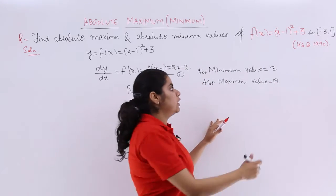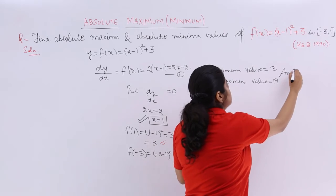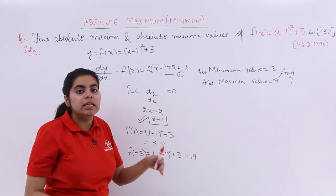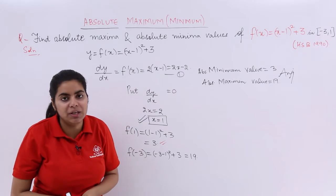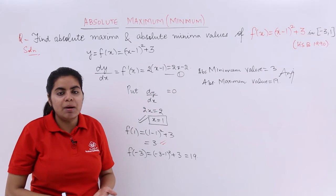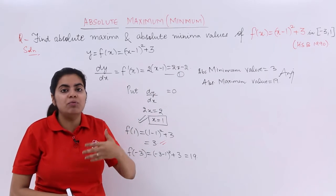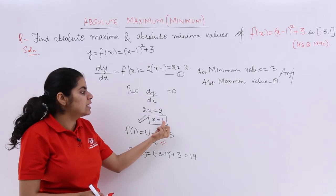Now, in this question you have directly got the answer and it has become very simple. Why? Because the stationary point actually coincided with one of the boundary points. But otherwise, what will happen is you will have to check for the other boundary point too. Suppose this was x = 5.